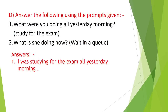When answering, change the pronoun 'you' to 'I.' With 'I,' the auxiliary is always 'was.' After 'was,' we use verb with -ing. Remove 'doing' and replace it with the verb in brackets with -ing added. Since 'study' ends in Y, we simply add -ing directly without any change. So: I was studying for the exam all yesterday morning.